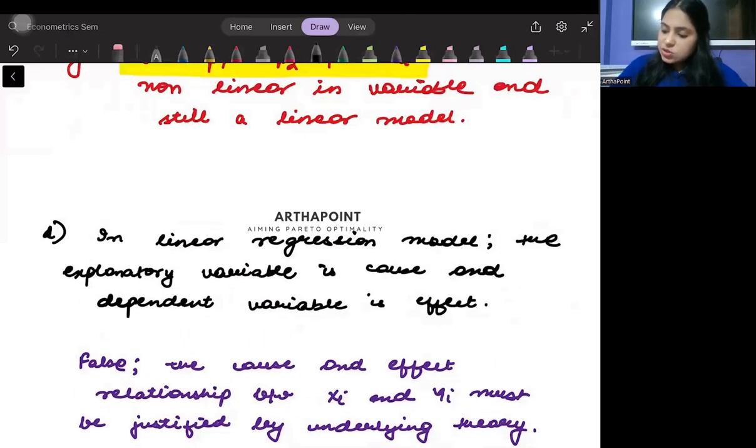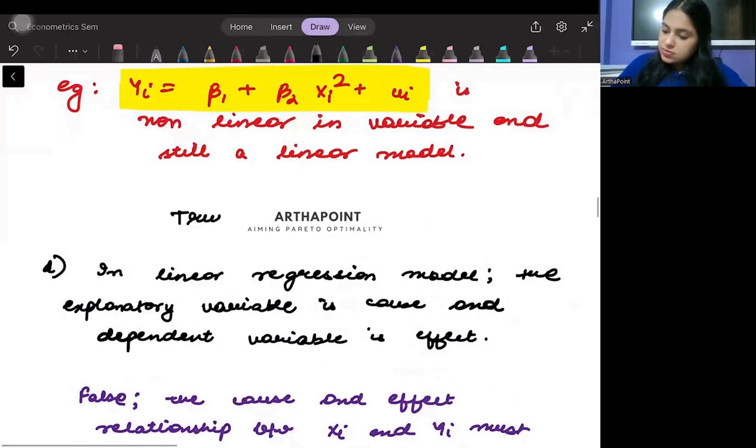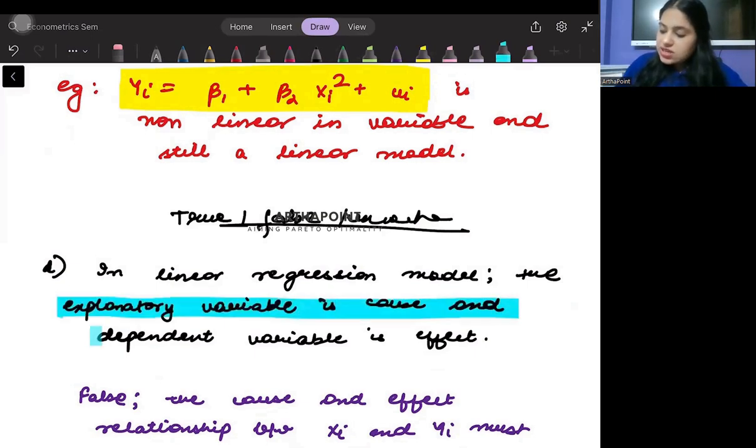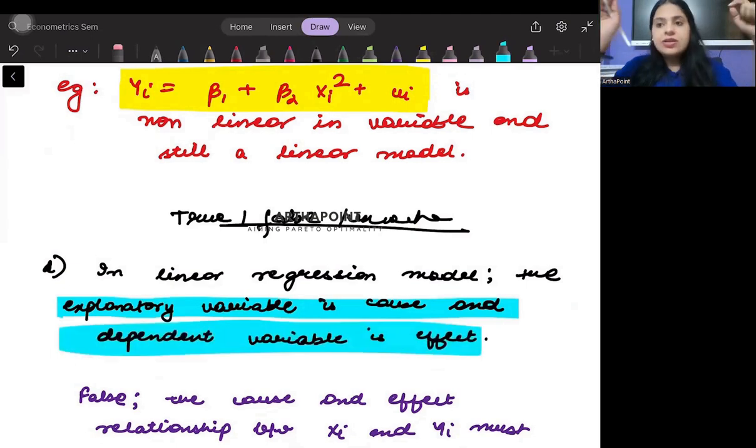Let us look into this statement. This is again a true-false statement. So it says in linear regression model, the explanatory variable is cause and dependent variable is effect.